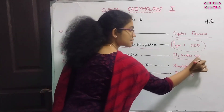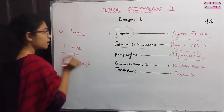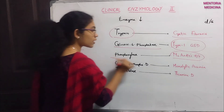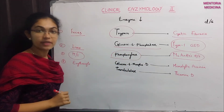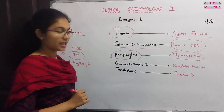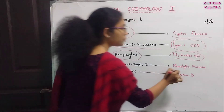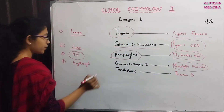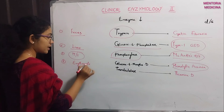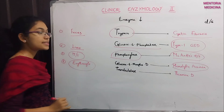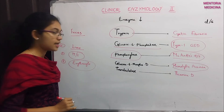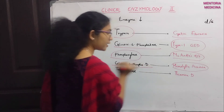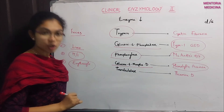For type 1 glycogen storage disease, a liver test for glucose-6-phosphatase is done and its normal level is assessed. For McArdle's disease, muscle phosphorylase enzyme levels are tested. For hemolytic anemia, erythrocyte RBC glucose-6-phosphate dehydrogenase is tested at normal levels.